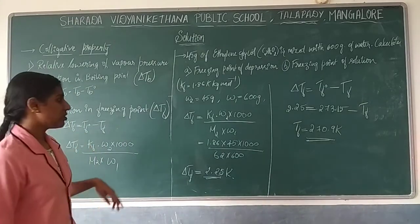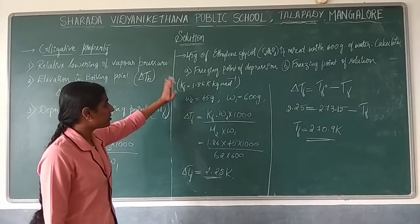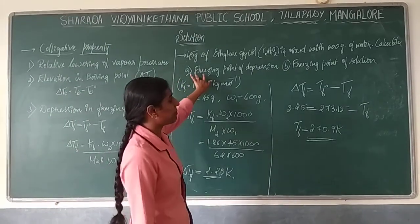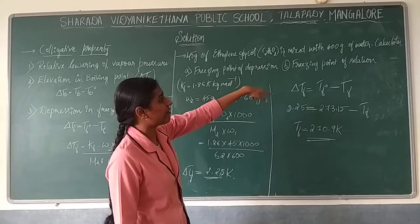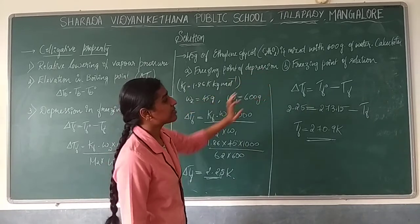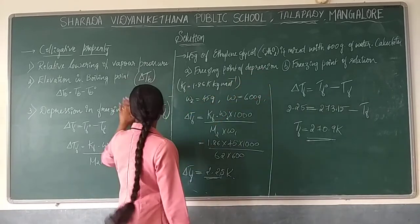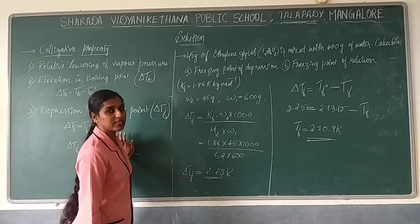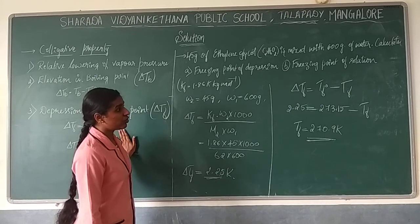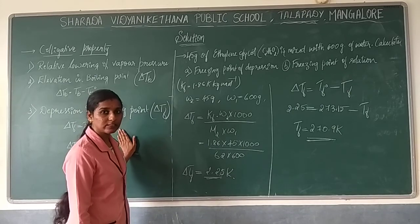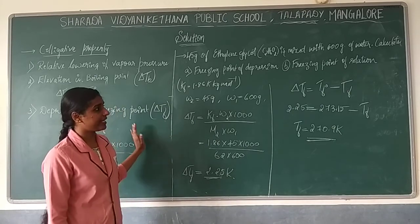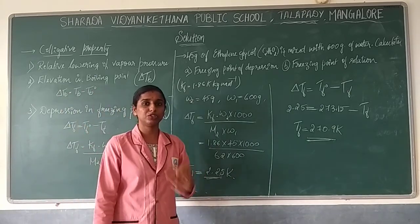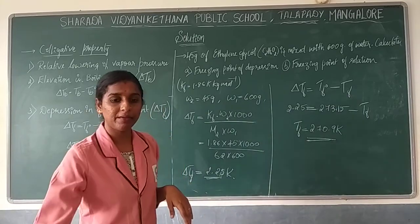To find freezing point of solution: delta Tf = Tf0 minus Tf. So 2.25 = 273.15 minus Tf. Therefore Tf is approximately 270.9 Kelvin. Under these two concepts, any problems given — go through them, find the answer, and if you have any doubt when class starts, you can ask. Thank you.